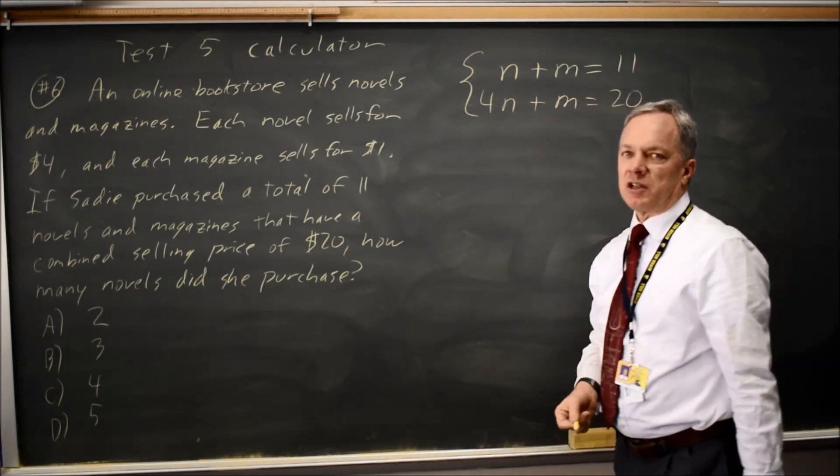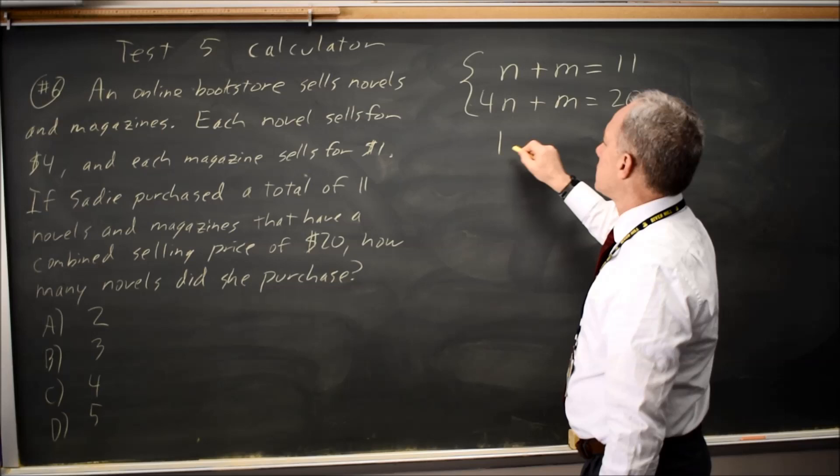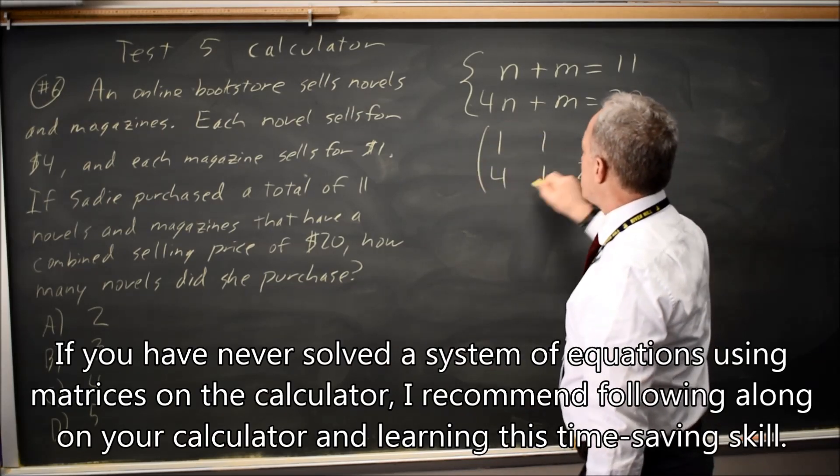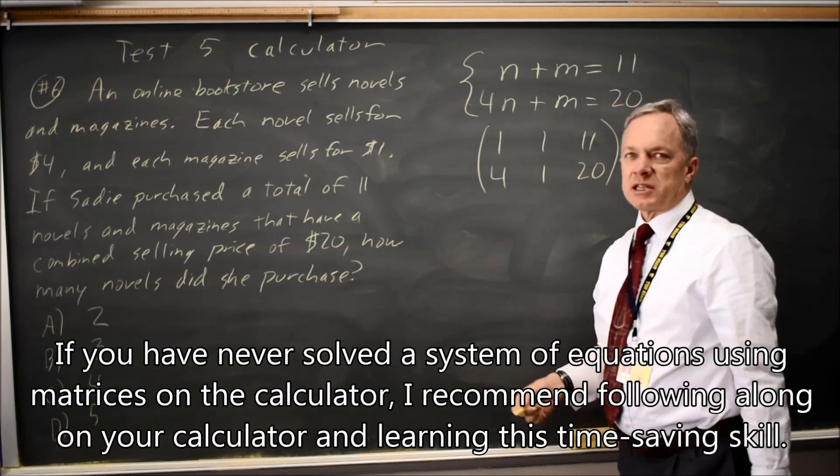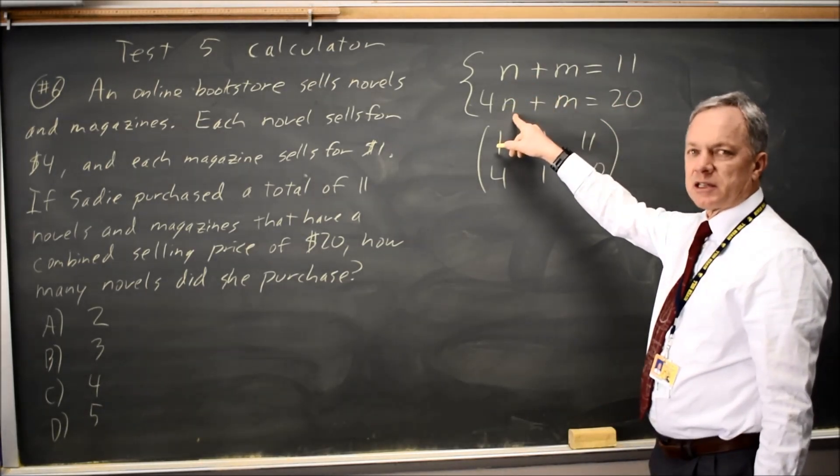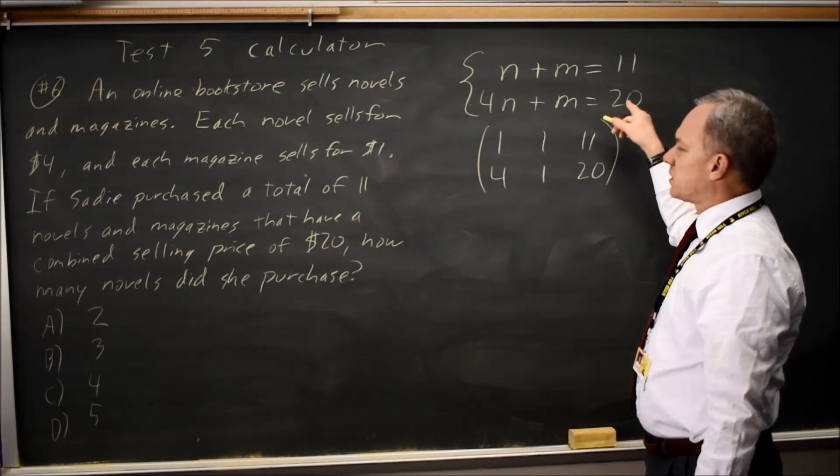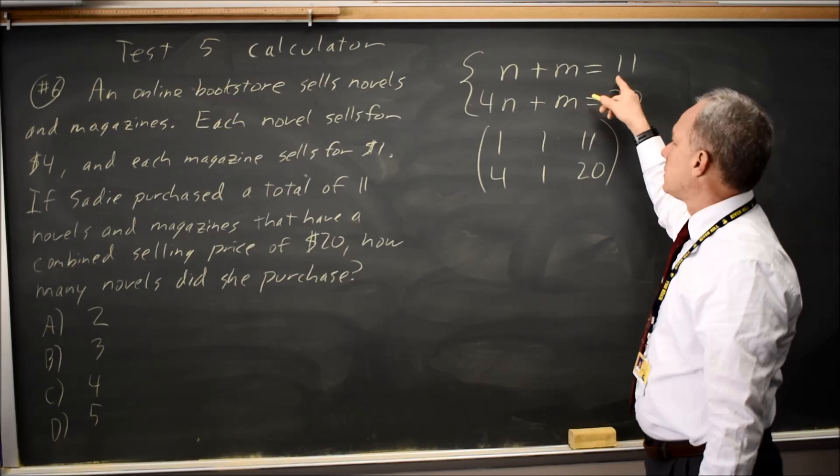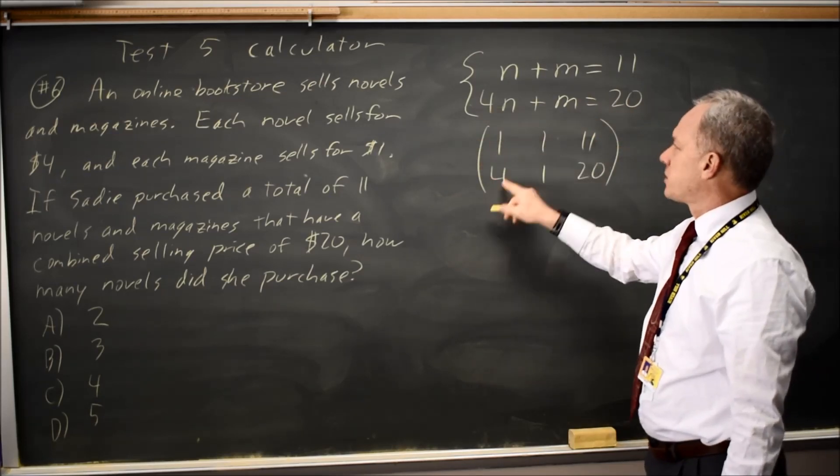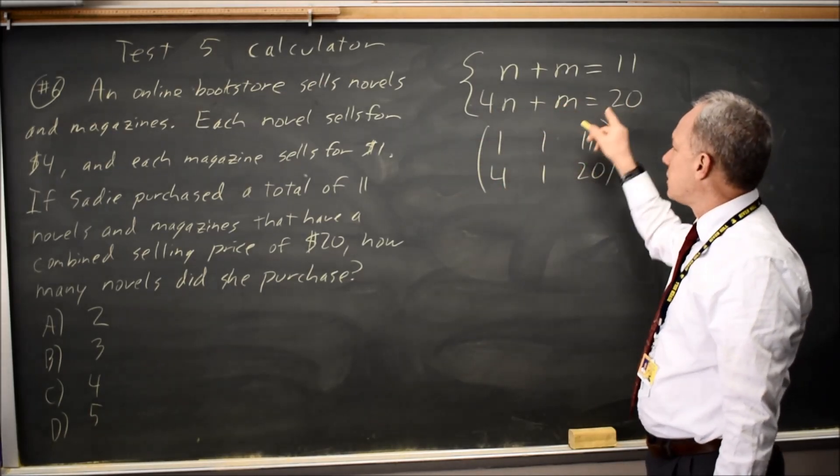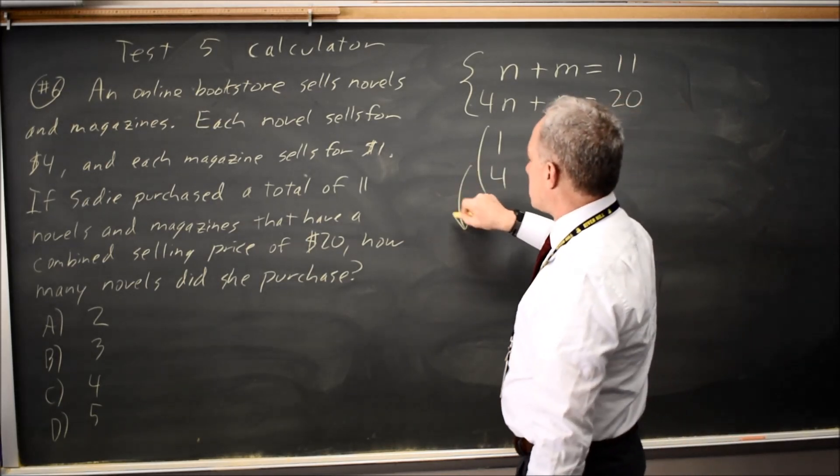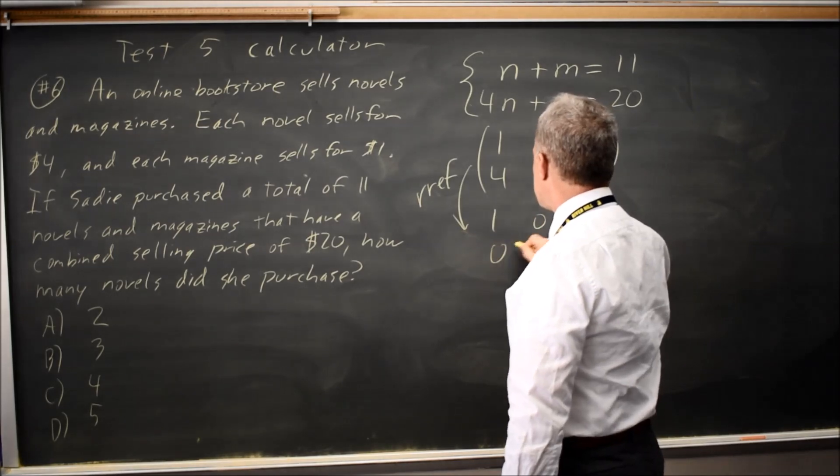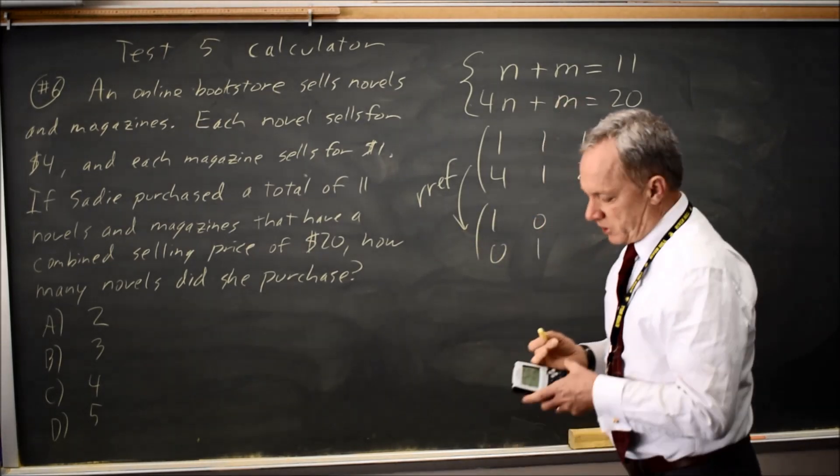My favorite method for solving systems on the calculator section is matrices. When the equations have the two variables in the same order on the left hand side equals the constant by itself on the right, you can bring down these coefficients. One n, one m, eleven. Four n comes down as four, one m comes down as one, and the twenty comes down. Find reduced row echelon form for that matrix.